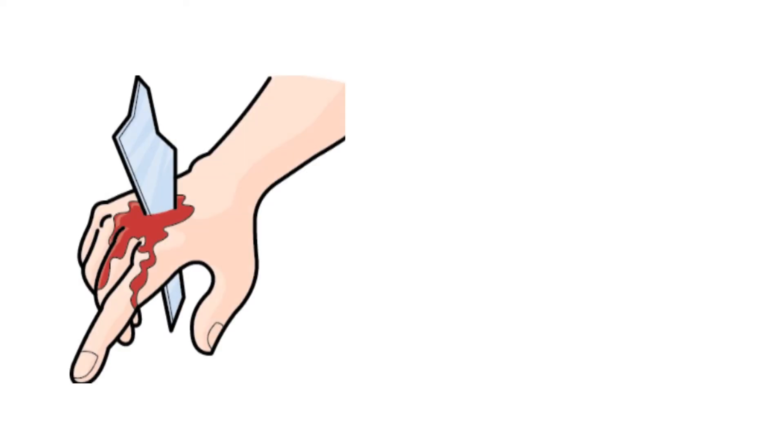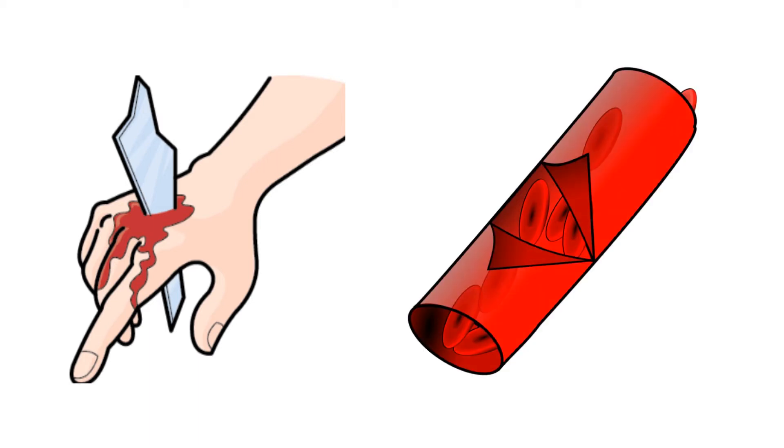Blood clots form to stop excess blood leaking from your body after you break or cut the surface of your skin. If a blood vessel is damaged, bleeding occurs until a clot forms.